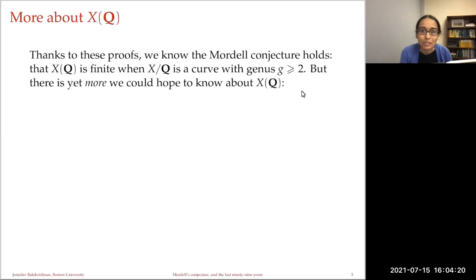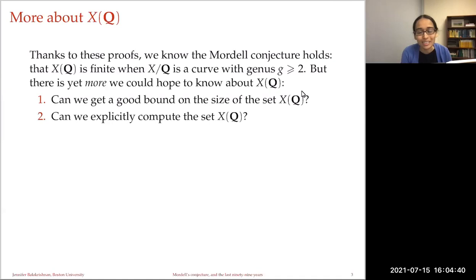So now we have a few different perspectives on Mordell's conjecture. We truly know that the set of rational points on these curves is finite, but we don't have an effective way of computing the set in general. We would hope to do more: one goal is a good bound on the size of the set of rational points — much like we saw during the first lecture, sometimes we can get a bound.